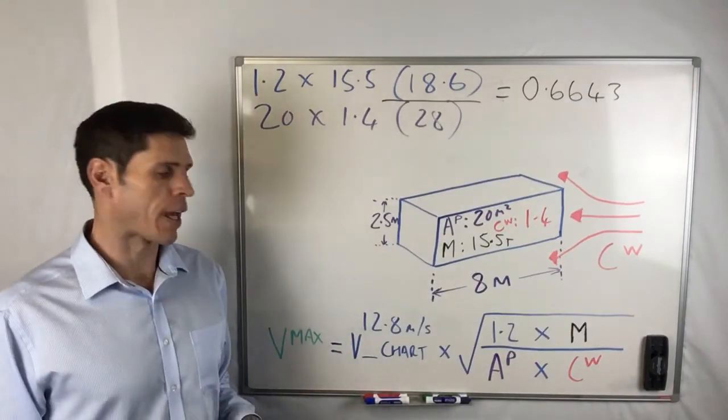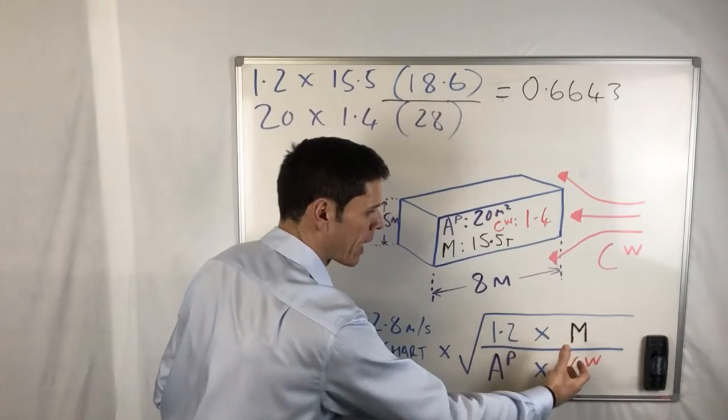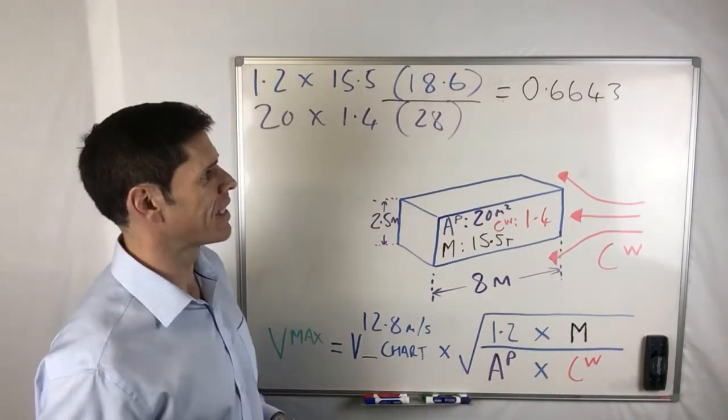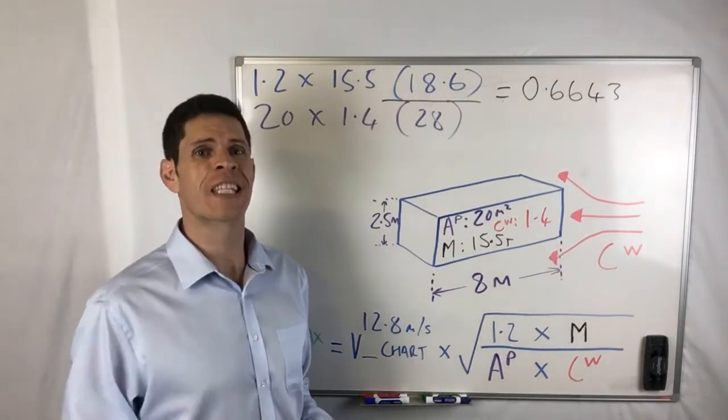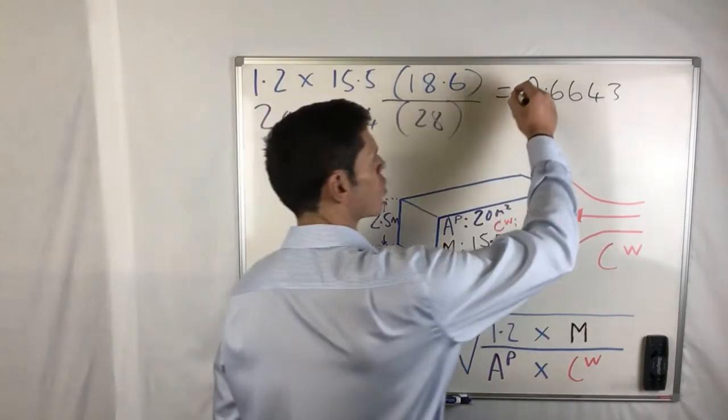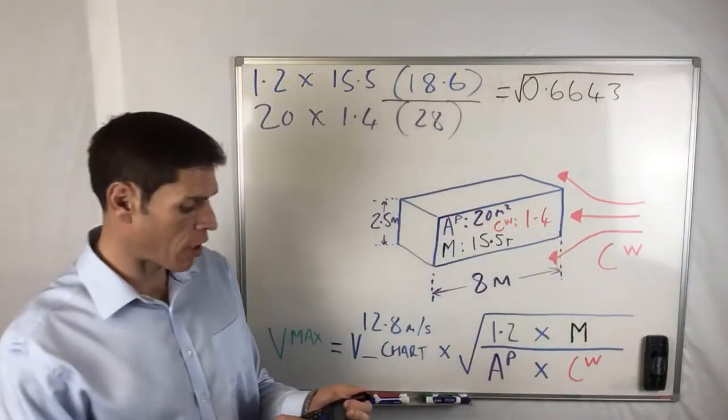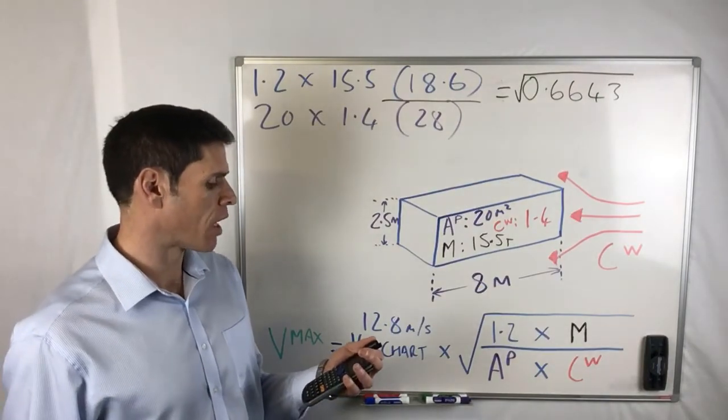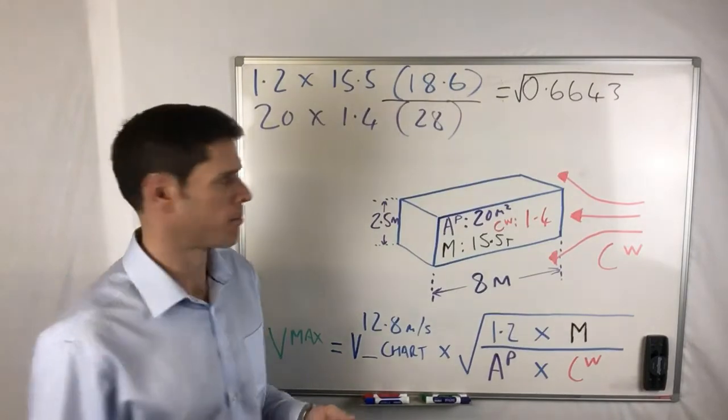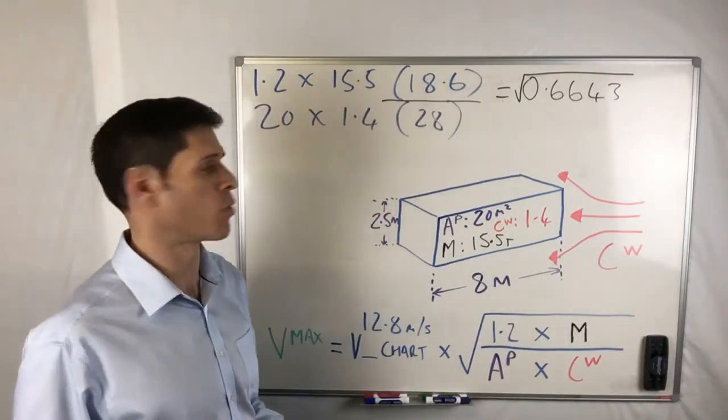Now what we've got then is we have the total created by this, this is the result of this part within the square root. The next thing you need to do is just using the little tick symbol on your calculator, the square root function, we need to square root that. So if you square root that figure, it then comes out as 0.81504, again just depending on how many decimal places you actually want to use.